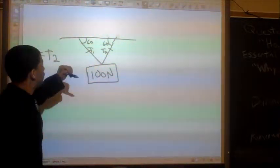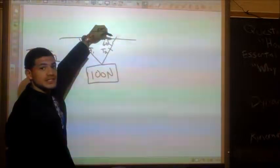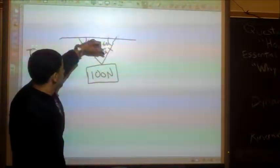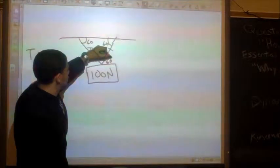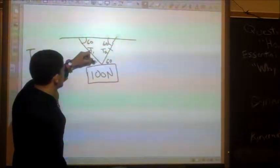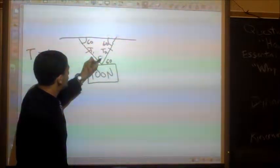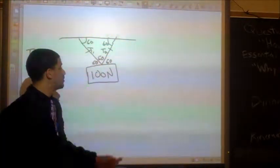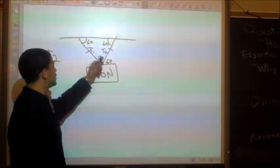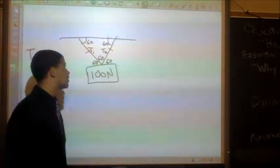Also, we know that we have alternate interior angles. So if this is 60, we also know that this is 60, and we know that this is 60, which also tells us that this also has to be 60, because we have a flat surface, and so these three angles have to equal 180 degrees.